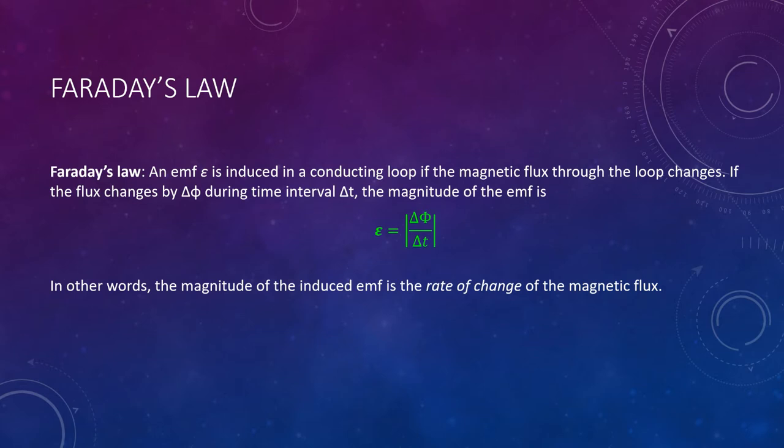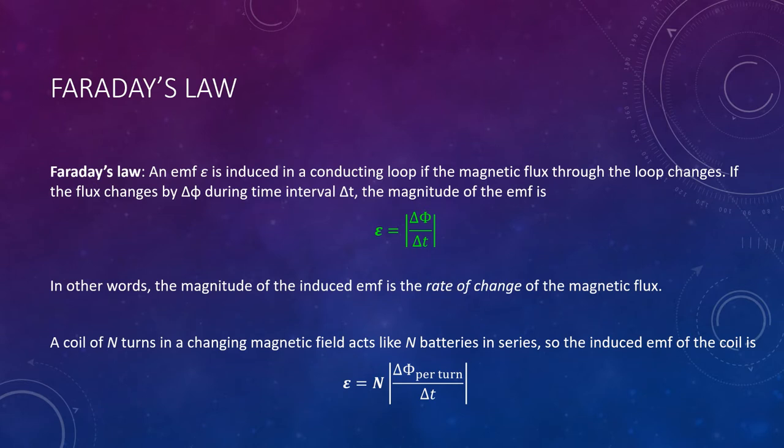This is just for a single loop. If you have a coil of multiple loops, we multiply the equation by n, where n is the number of turns. I'll do an example here, and then we'll talk about our second topic, which is eddy currents.